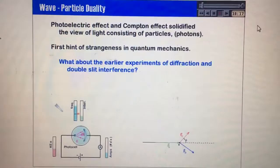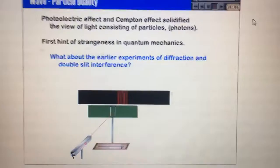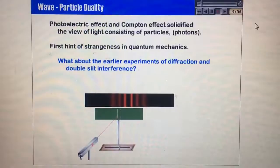So now we get the first hint of strangeness. Because the question we ask is, well, what about the earlier experiments? We haven't really mentioned that. Remember, we had experiments of diffraction, and we had the double slit experiment, which showed interference. So here we show the double slit experiment. We shot a laser on two slits that are narrowly separated. We saw that we observed this banding, and it depended on the separation of these slits.